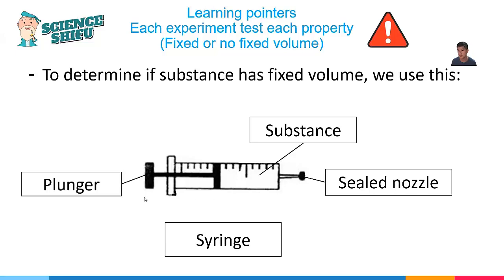And as you can see, the syringe has a plunger. And we will put the substance inside and you try to push the plunger. If the substance is compressed, what does that mean? It means that it has no fixed volume. If the plunger, no matter how I try to push it, and it remains the same, then you will realize that there is a fixed volume.